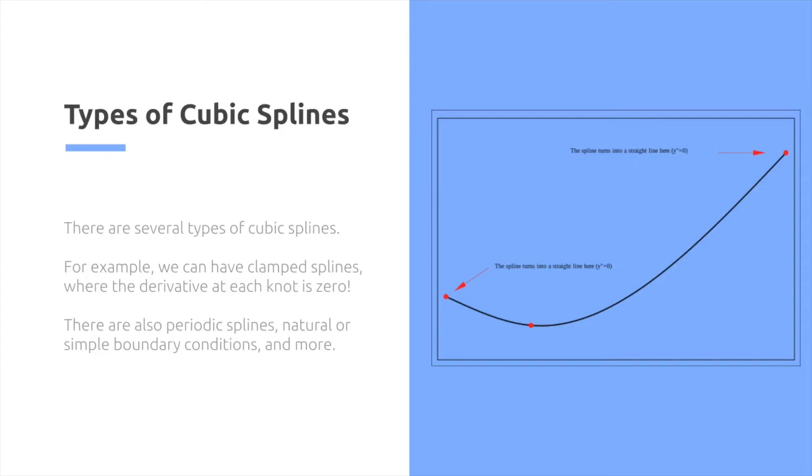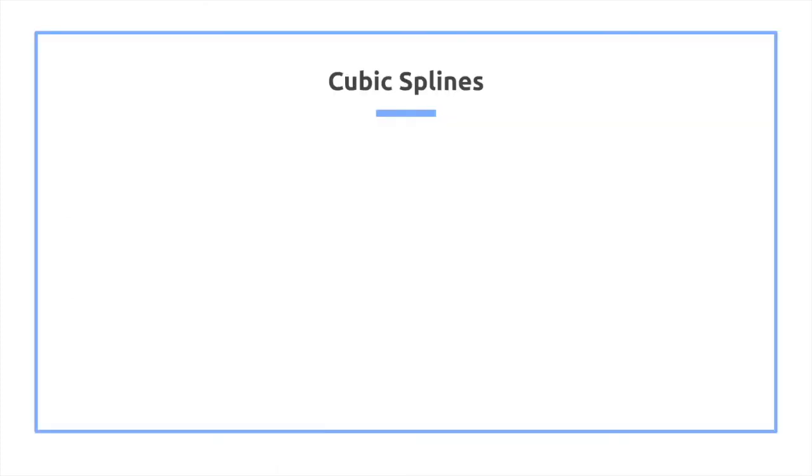There's different types also, such as periodic splines, natural or simple boundary conditions. So let's learn more about cubic splines.